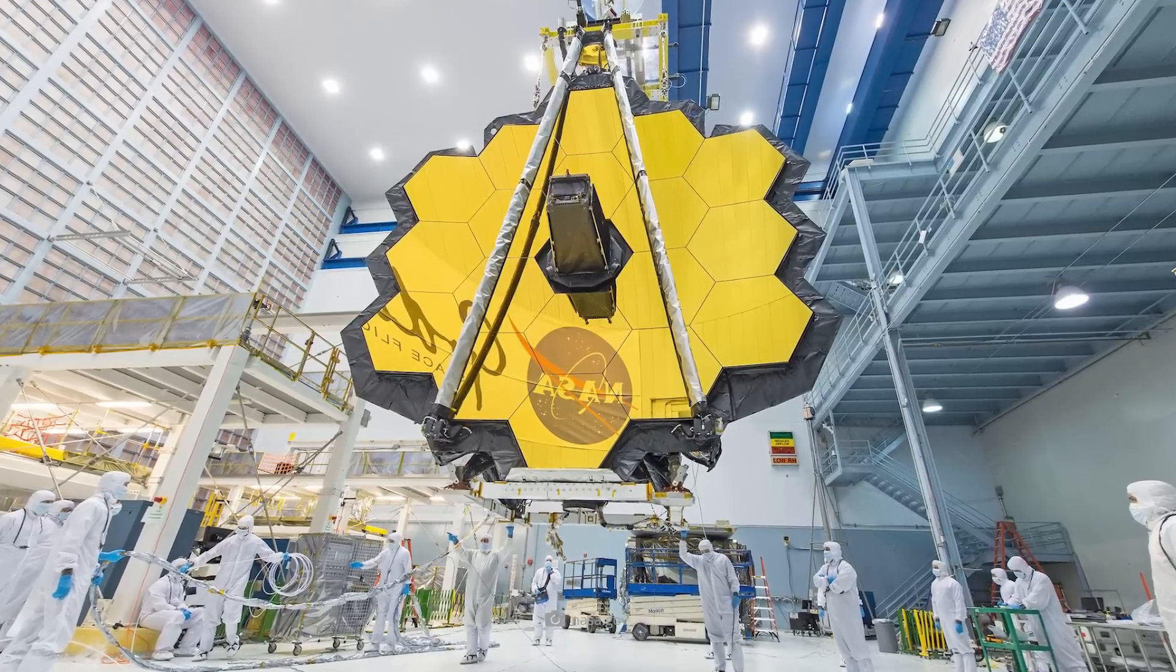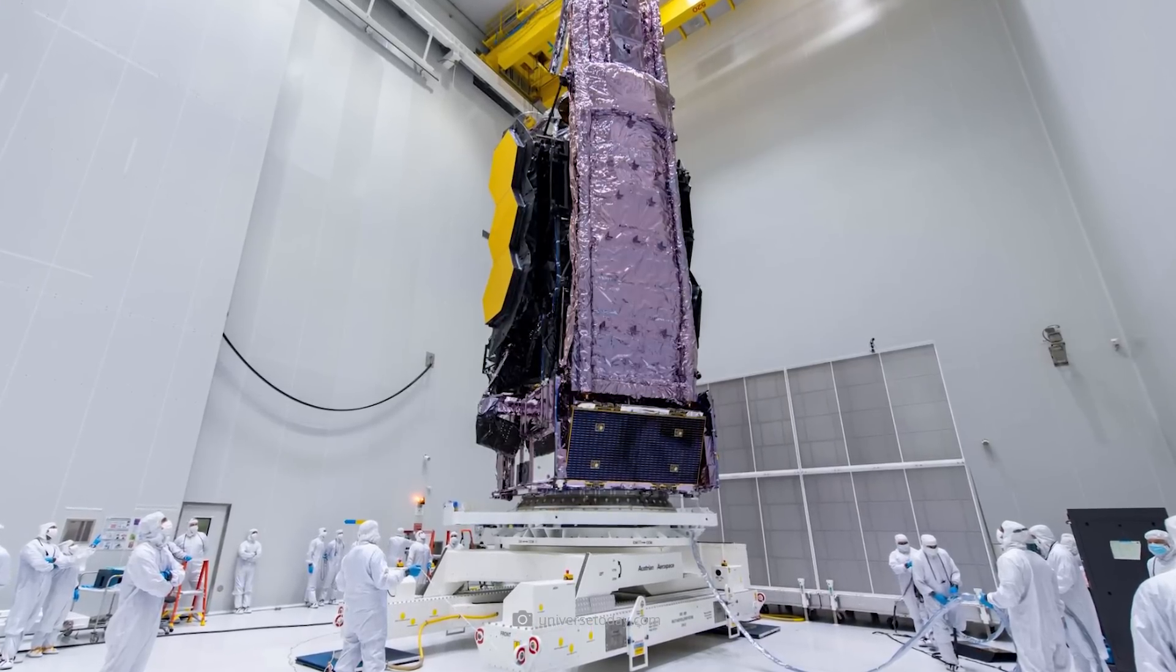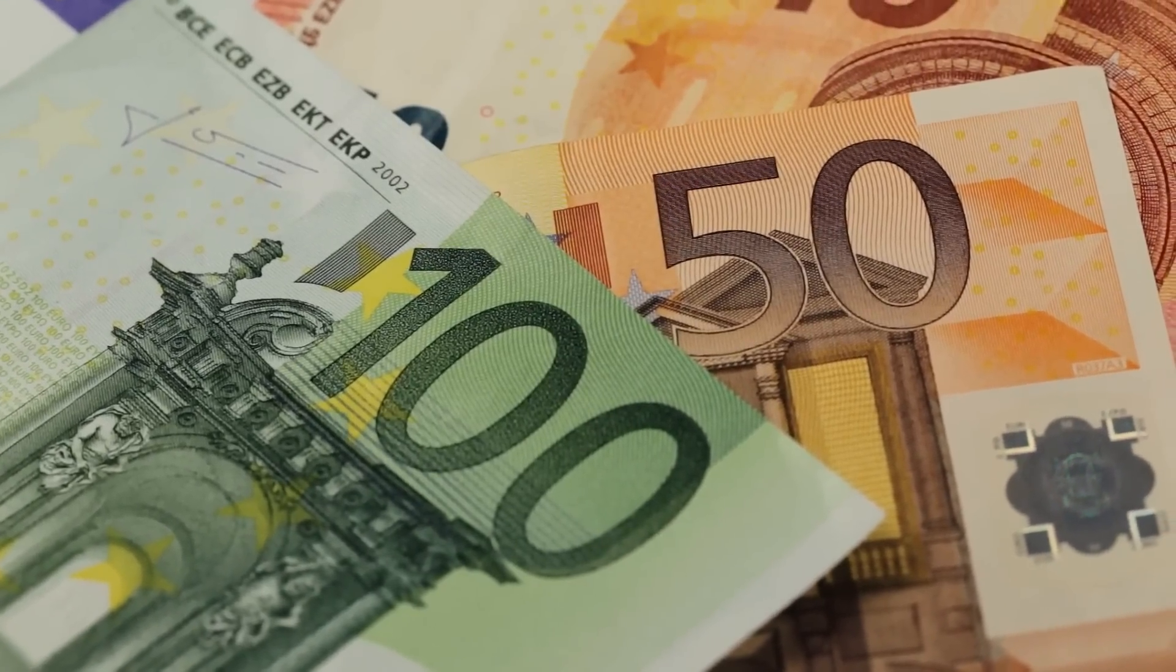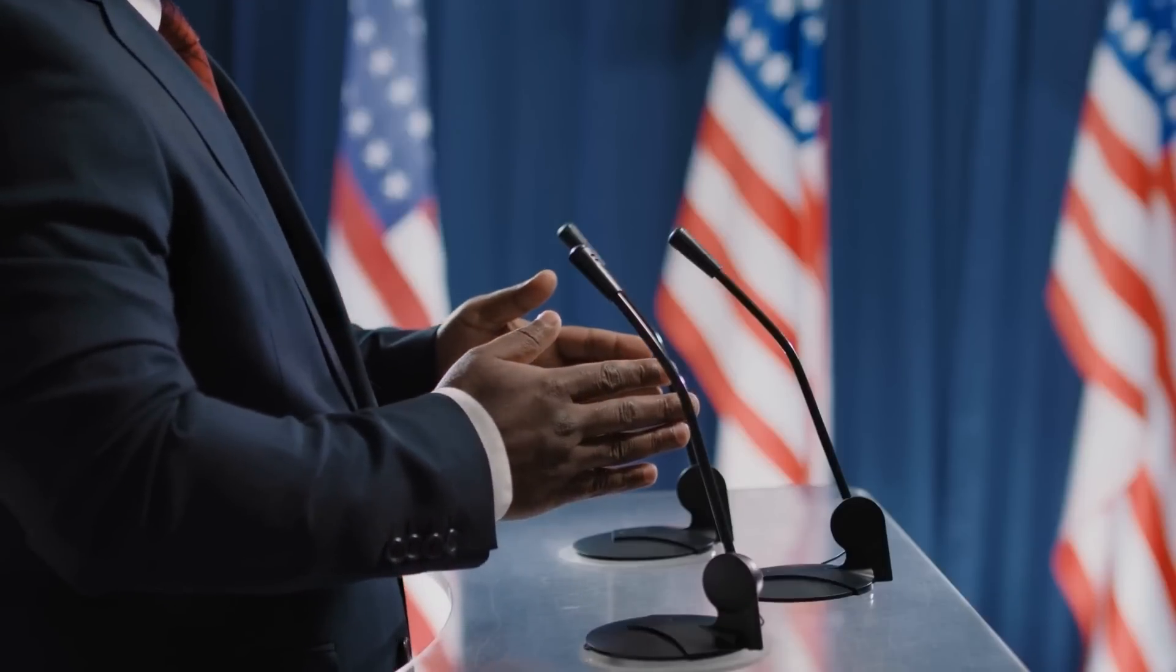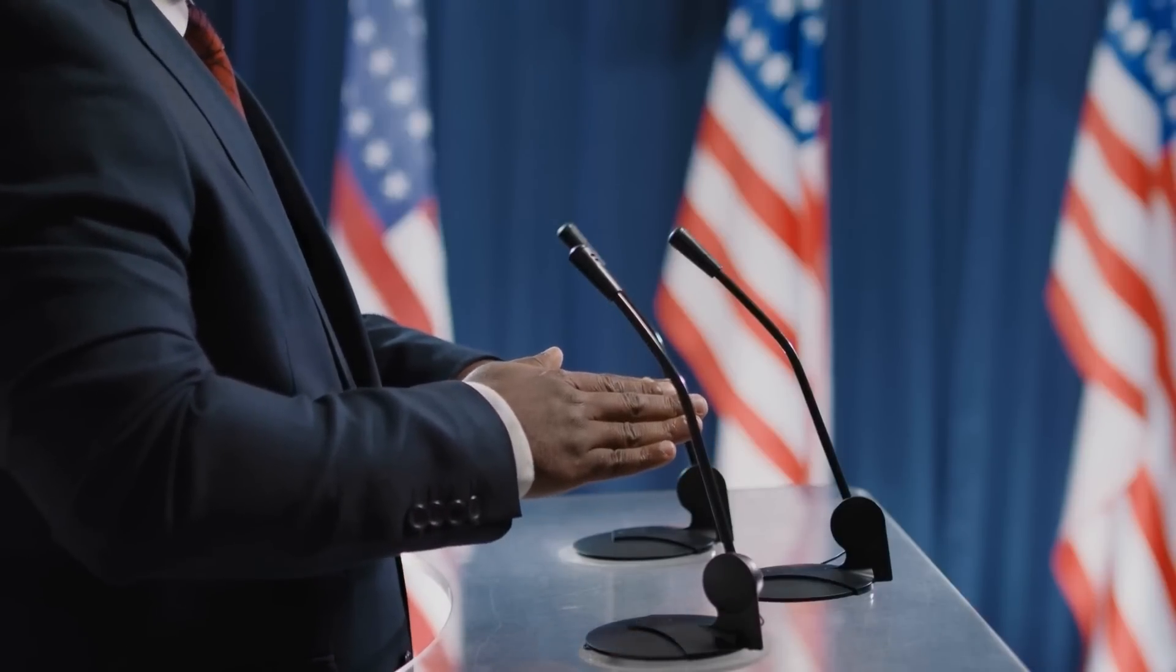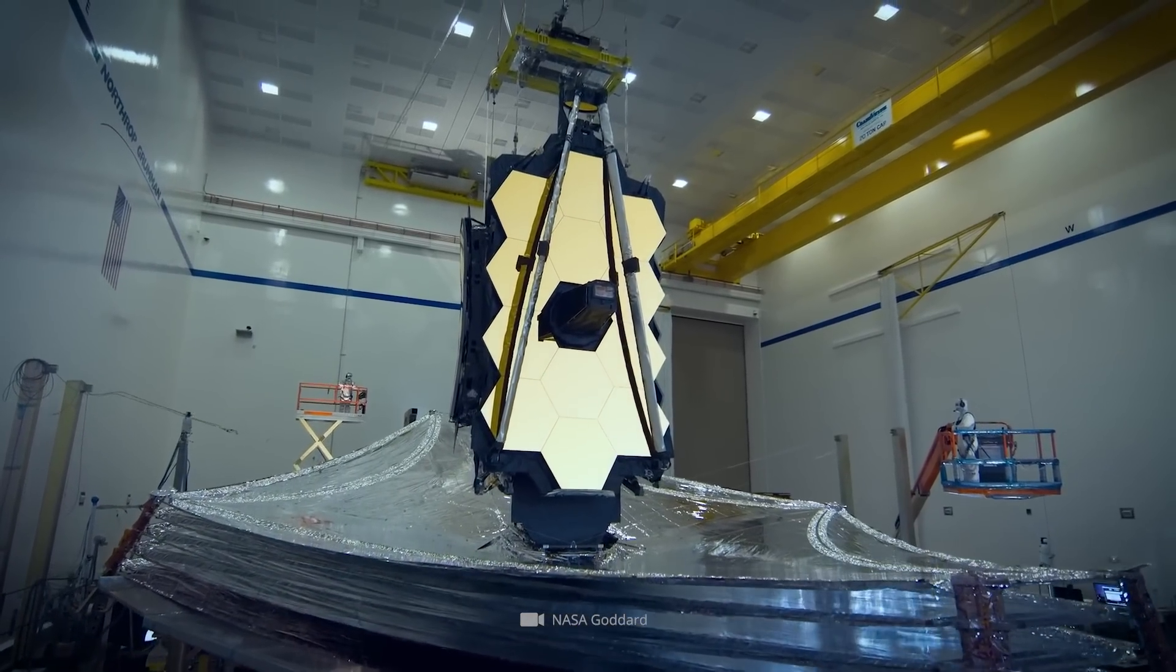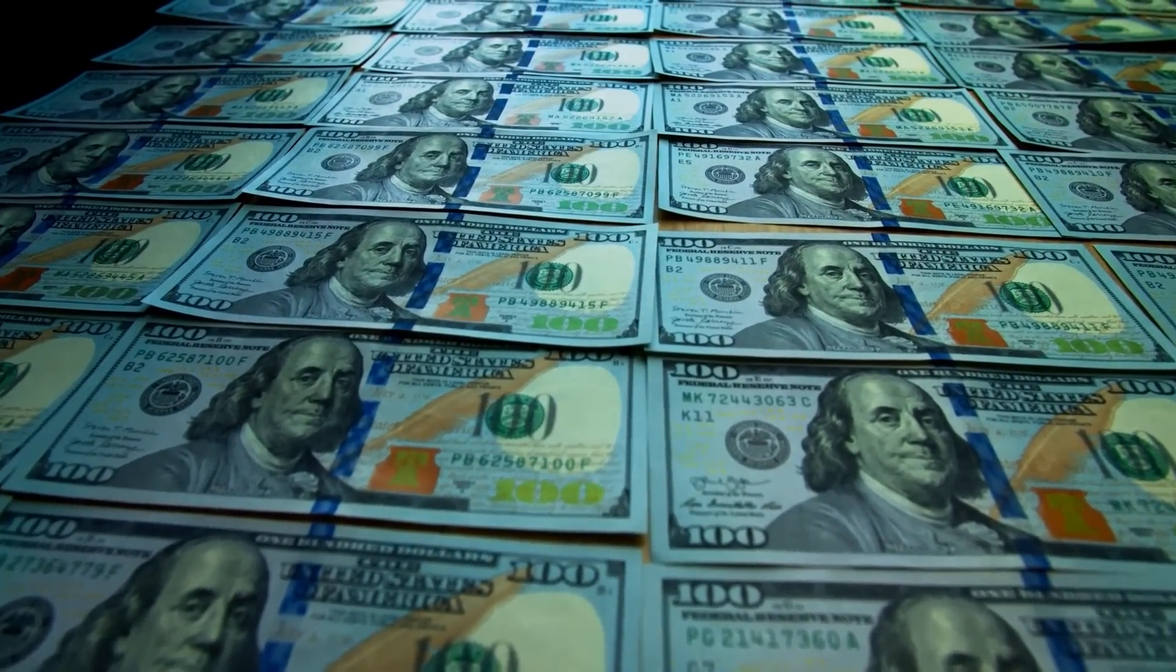But then technical faults turned up on a primary mirror, and further reworking took until 2014. $3.3 billion in construction and operating costs had been exhausted by that time. For a time, the U.S. House of Representatives Science Committee recommended stopping the project. The costs had grown to an incredible $8.7 billion. But how do you stop a project that has already cost $3 billion?